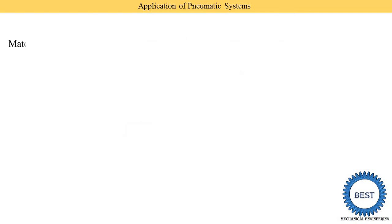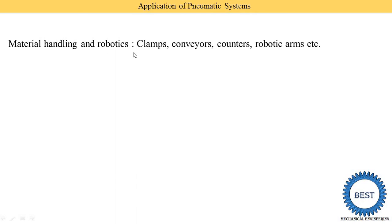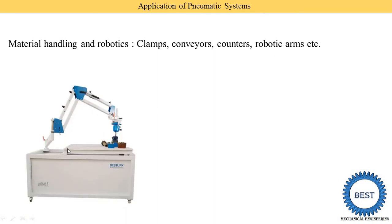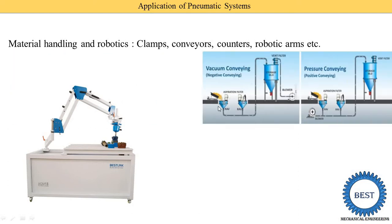The second application is material handling and robotics. Different types of clips, conveyors, and robotic arms are used for material handling. Here I show you an image of a robotic arm — it is used to transfer material from one place to another across a certain area. This is also a material handling system.